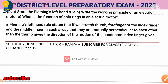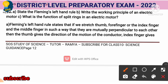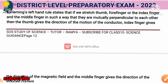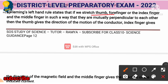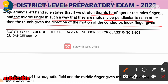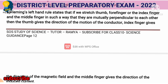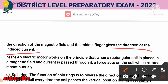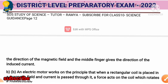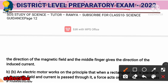Next three-mark question covers: state Fleming's left hand rule (1 mark), write the working principle of an electric motor (1 mark), and what is the function of split rings in an electric motor (1 mark). Fleming's left hand rule: when we stretch the thumb, forefinger, and middle finger in such a way that they are mutually perpendicular to each other — the thumb gives the direction of motion of the conductor, the index finger gives the direction of the magnetic field, and the middle finger gives the direction of induced current.